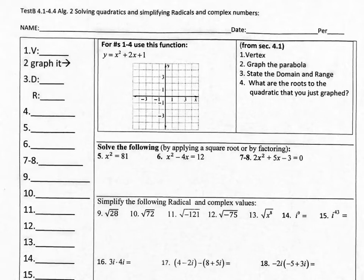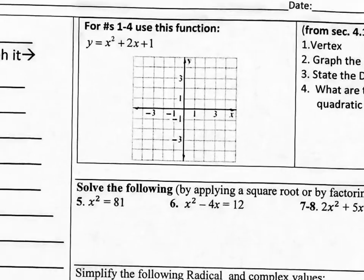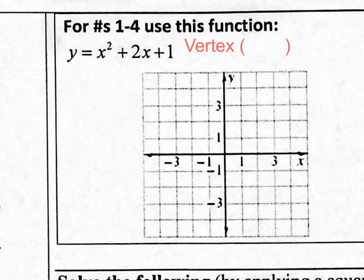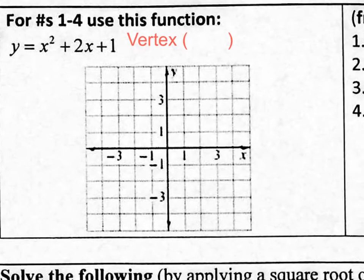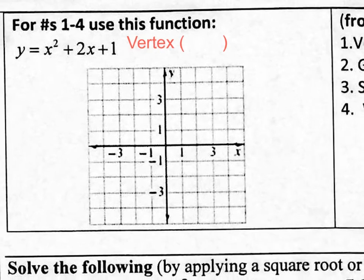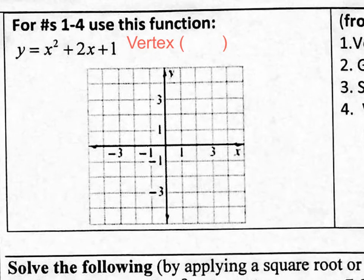So here's part one where I ask you to use this quadratic equation to graph it and to state the vertex, graph it, state the domain and range, and what are the roots of the quadratic that you just graphed? Anyhow, let's start this out by finding the vertex. So the vertex, what is the vertex? It's the most important point of a parabola. And of course, we're going to use the formula X equals negative B over 2A.